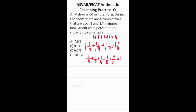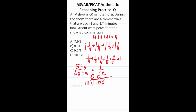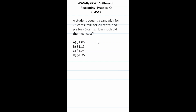This ASVAB PyCat arithmetic reasoning practice test question asks: what percent of a 60-minute show is commercial time, given four one-and-a-quarter-minute-long commercials? Adding them up: four whole minutes plus four quarters equals one more minute, so 5 of the 60 minutes are commercials. That's 5/60, which reduces by a factor of 5 to 1/12. Doing the long division: 12 doesn't go into 1 or 10, goes into 100 eight times (12×8=96), remainder 4; then 40 divided by 12 is 3 (12×3=36). The answer is 0.083, or about 8.3%.